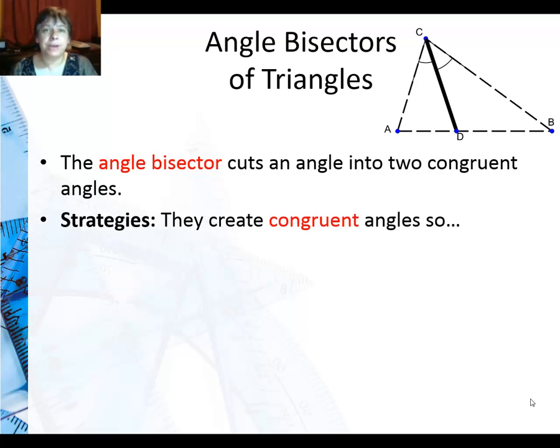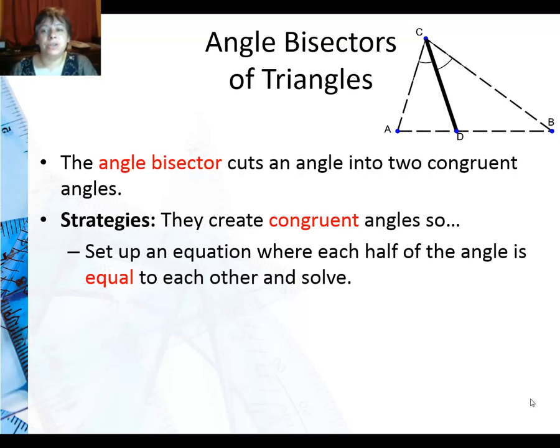And because they create congruent angles, the way we solve them is we set up an equation where each half of the angle is equal to the other and solve. Now occasionally we might say something is a bisector and we'll give you one of the pieces.